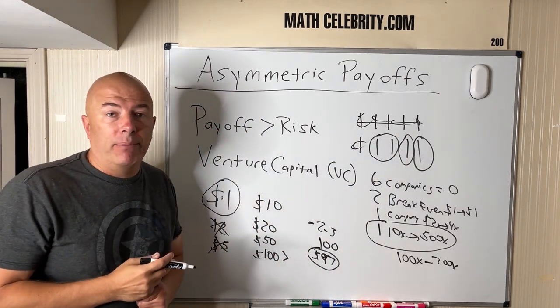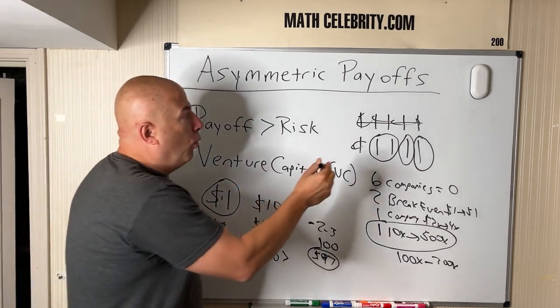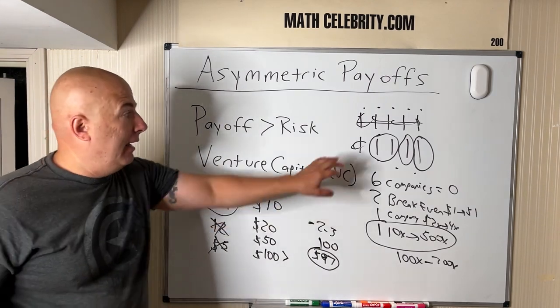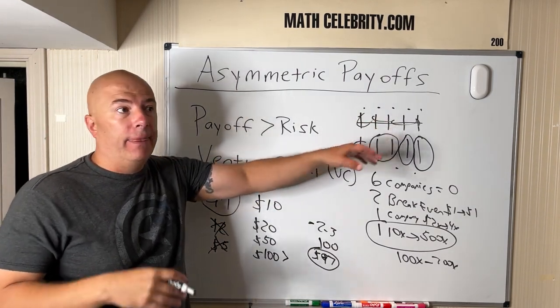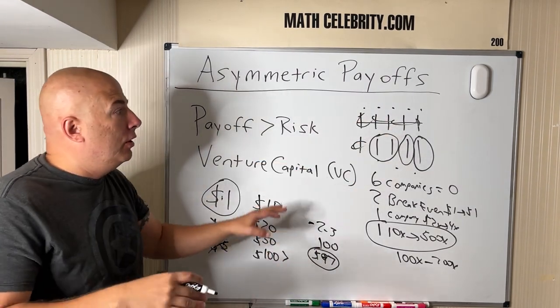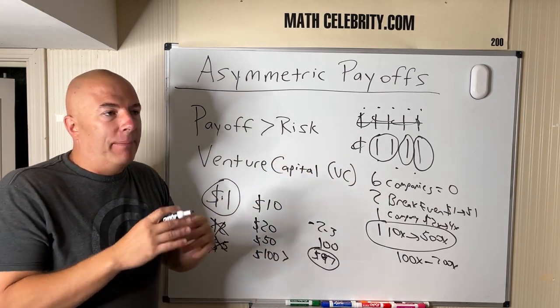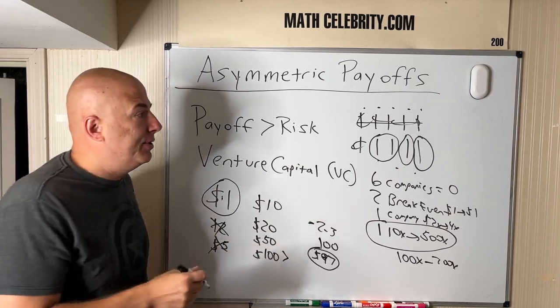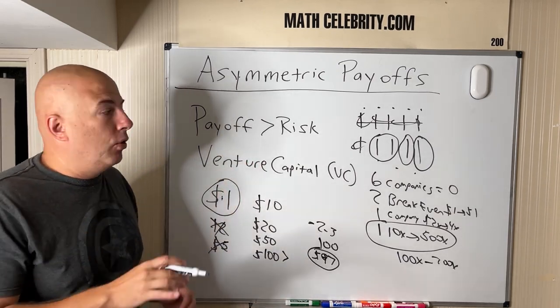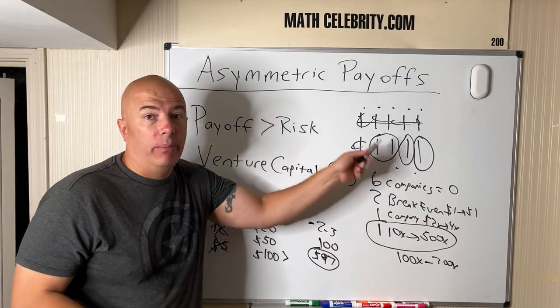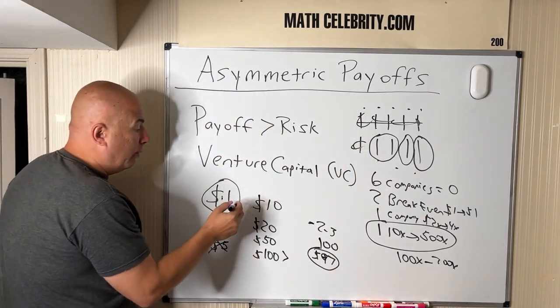But once they narrow it down to 10, 15, 20 companies, they're spreading money across all of those. And one of the best quotes I ever heard from a venture capitalist who's worth nine figures is, we can't afford to not be in anything that falls in our target portfolio. So if they identify 20 companies after their research and due diligence,